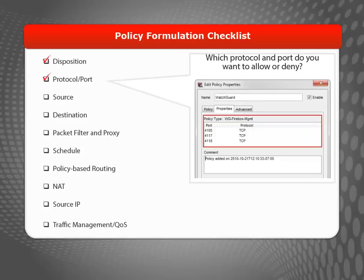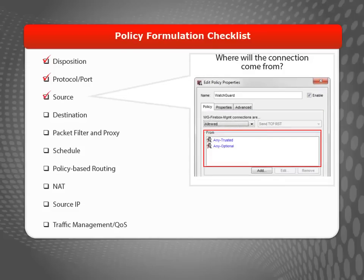Next you need to know which protocol and port you want to control. WatchGuard has a lot of predefined policies that you can choose from for common services, but if you don't see what you're looking for, you can create a custom policy. The next thing you need to know is the source — where is the connection coming from? This could be an alias, a user, a group of users, an IP address, a subnet, or a host range.